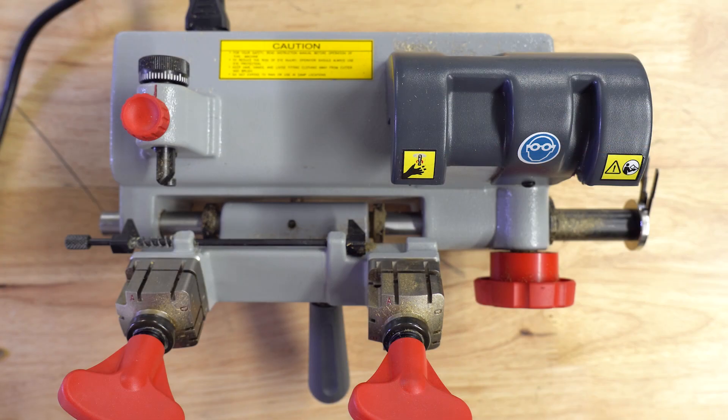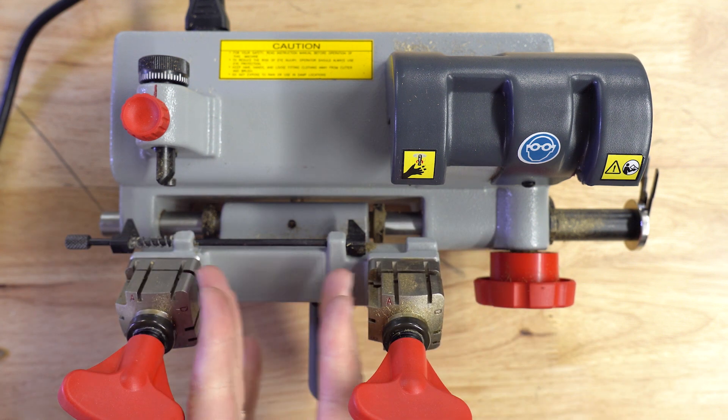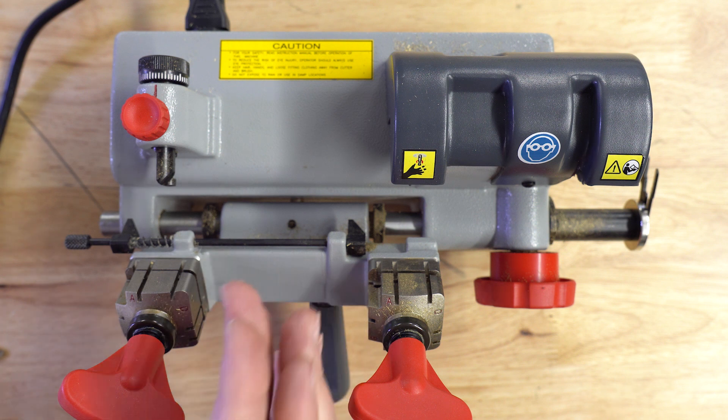Now before we cut a key, let me just go over a few of the basic features here. As you can see, these jaws are wide. There's a lot of distance between them. So cutting any sort of remote head key is a non-issue.